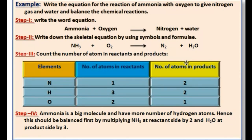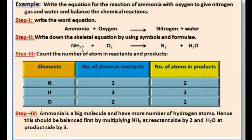Now let's look at an example of how to balance a chemical equation. Write the equation for the reaction of ammonia with oxygen to give nitrogen gas and water, and balance it. Step one: write the word equation — ammonia plus oxygen gives nitrogen and water. Step two: write the skeletal equation using symbols and formulas — NH3 + O2 → N2 + H2O.